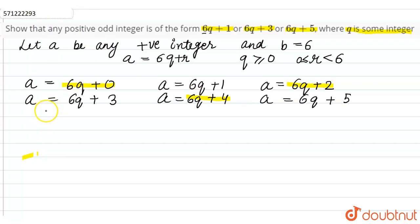The question is asking for positive odd integers in the form of 6q+1, 6q+3, 6q+5. So out of these six, we have shown that three are positive even integers because they are divisible by 2. The numbers remaining are 6q+1, 6q+3, and 6q+5.